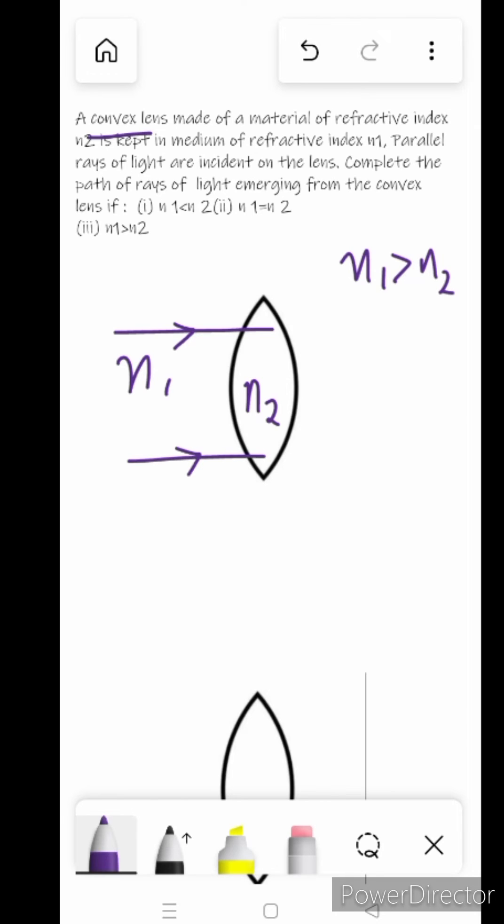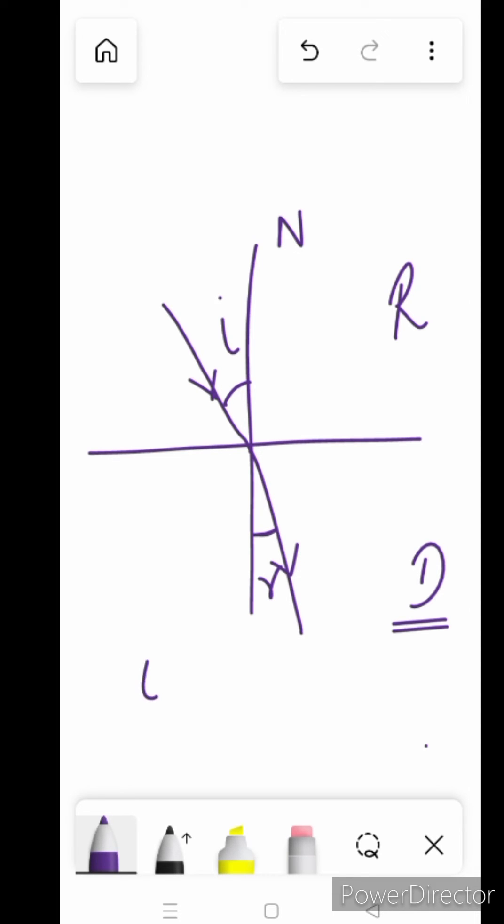Before going ahead with the question, I want to recall one concept with you. If there are two media, one is rarer while the other is denser, we draw a normal. If a ray of light is coming and striking a medium from rarer to denser, it will bend towards the normal. The angle of incidence would be greater than the angle of refraction.